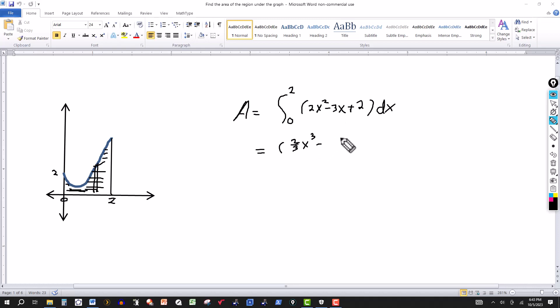For the x term, integrate with respect to x, add 1 to the 1, that gives me 2. Divide the -3 by 2 gives me -3/2x². And the integral of the constant 2 with respect to x is 2x. Then we evaluate this from 0 to 2.